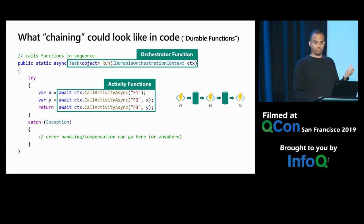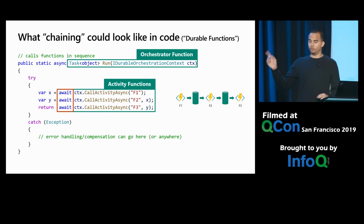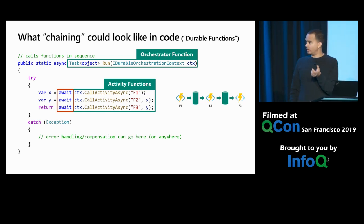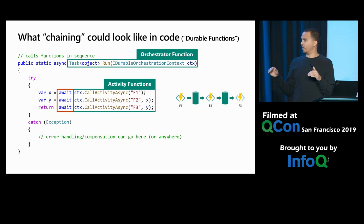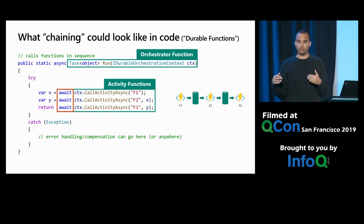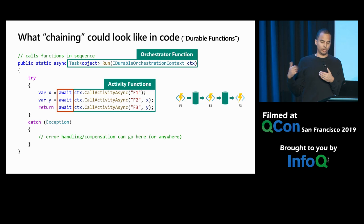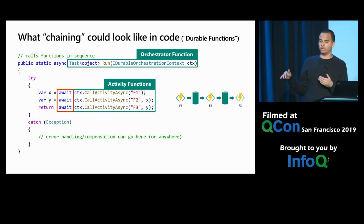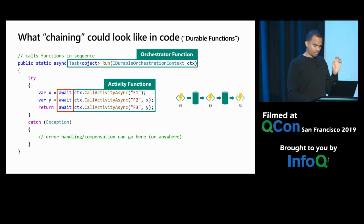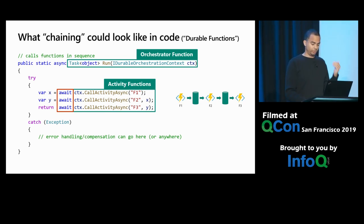We achieve the exact same reliability between f1, f2, and f3 as if you manually implemented this with stateless functions and queues. Our use of await is important — whenever you do an await statement, we checkpoint your progress within the function. If it gets unloaded from memory or crashes, say after finishing f2 but before f3, as soon as we bring the code back up on a healthy VM, we start where we left off — we don't re-execute f1 and f2, we start directly from f3.